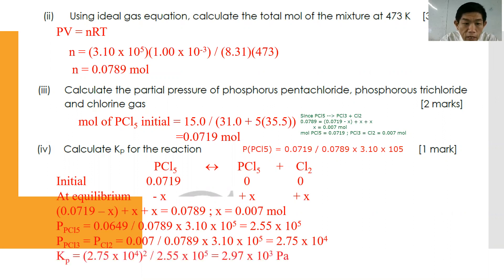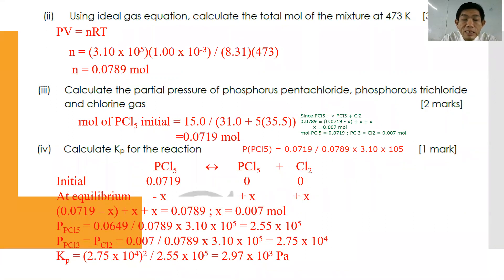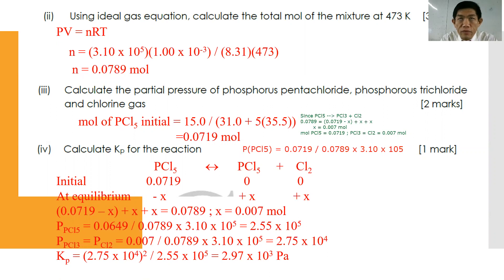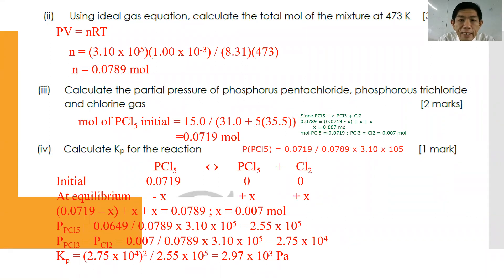After calculating the partial pressures, substitute into the Kp expression: Kp = P(PCl₃) × P(Cl₂) / P(PCl₅). You get Kp = (2.75 × 10⁴)² / (2.55 × 10⁵) — wait, Kp ≈ 2.97 × 10³ Pa. So first find the moles at equilibrium for each species, sum the total moles, calculate mole fractions, then partial pressures, and only then apply the Kp expression. For more information, refer back to my old YouTube videos on how to calculate Kc and Kp.